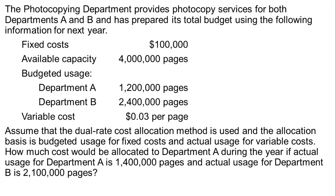Here we have a question where we're allocating service department costs. The photocopying department provides photocopy services for both departments A and B and has prepared its total budget using the following information for next year: fixed costs $100,000, available capacity four million pages, department A is going to use 1.2 million pages, department B is going to use 2.4 million pages — adding up to three million six hundred thousand pages.